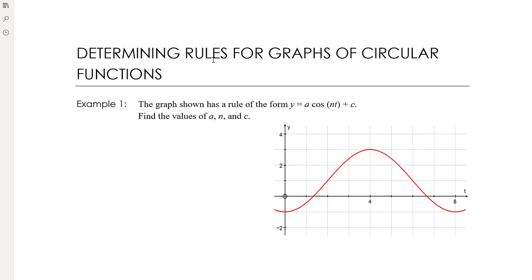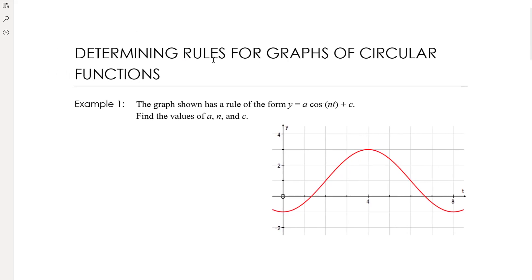If it's a cosine function, the vertical shift c is one of the early things we can work out. The middle line of the graph oscillates two above and two below it, so the amplitude is clearly two. The graph has gone up by one, so c equals one. We can also clearly see that the period is eight, which we'll use to work out n.